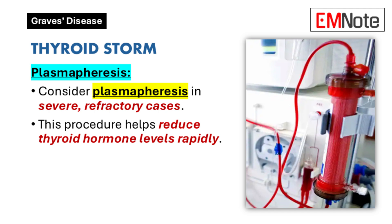Studies have shown that plasmapheresis can lead to significant reductions in free thyroxine and triiodothyronine levels, making it a valuable option in refractory cases of thyroid storm.